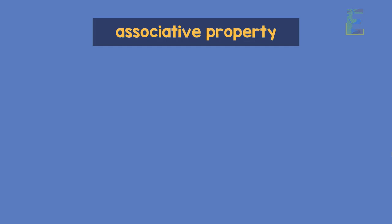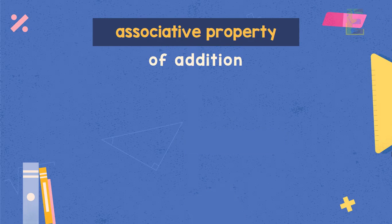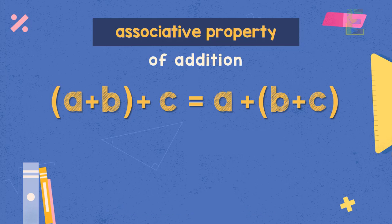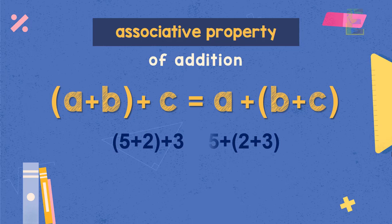Now let's proceed to the associative property of addition and multiplication. The associative property of addition states that when we add 3 or more numbers, we can group them in any manner and the sum will remain the same. For example, to add 5 plus 2 plus 3, we can group 5 plus 2 first and then add 3, or we can group 2 plus 3 first and then add 5. Both will have the same answer, which is 10.